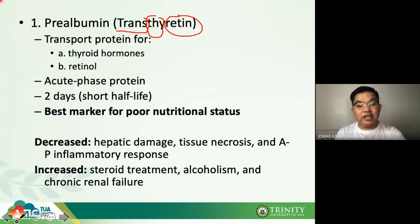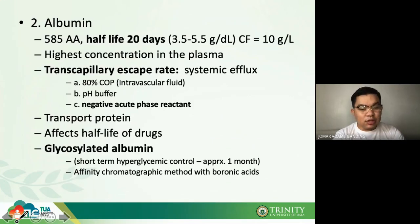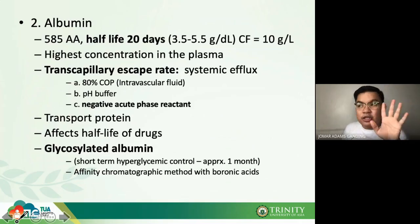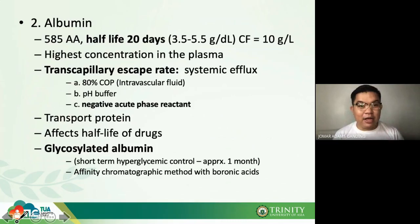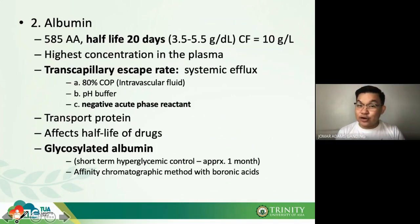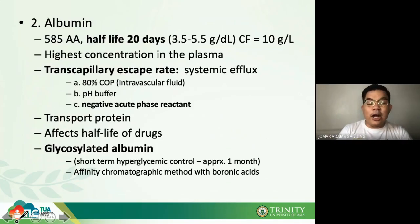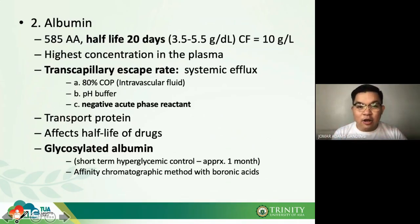Moving forward to albumin. What is most important to remember is the function of the protein — what is unique about it, and when it increases or decreases. Albumin contains 585 amino acids, has a half-life of 20 days, and has the highest concentration in plasma.